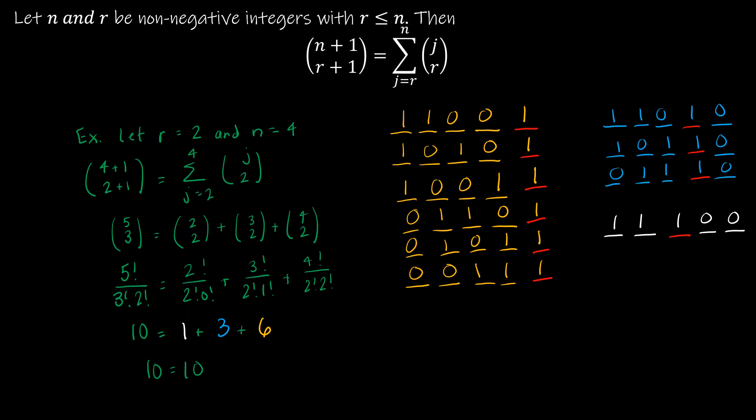So let's make sure that this makes sense to us. So on the left hand side, I have just the math. So I've randomly chosen r to be 2 and n to be 4. So again, to be very clear, this is not a proof.